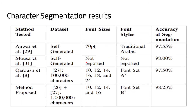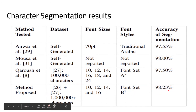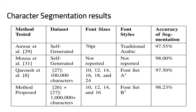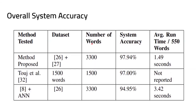For character segmentation, our method achieves 98.23% correct segmentation, higher than any previous work, evaluated on a larger and more diverse font set. For overall system accuracy, our proposed method achieves 97.94% classification accuracy and a remarkable runtime of 139 seconds — lower than any other method. Our system is not only accurate but also incredibly lightweight and fast.